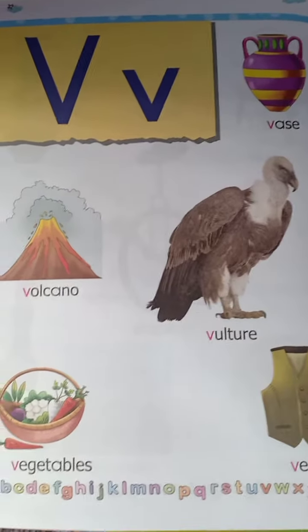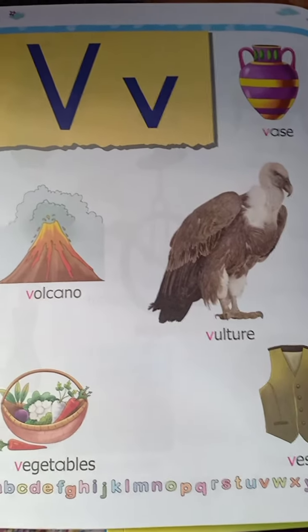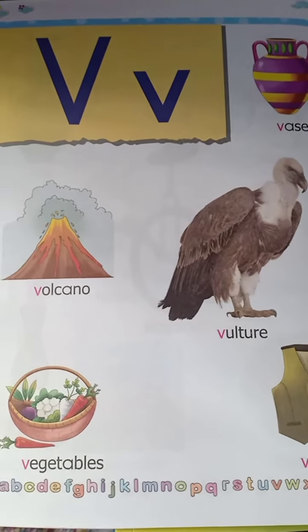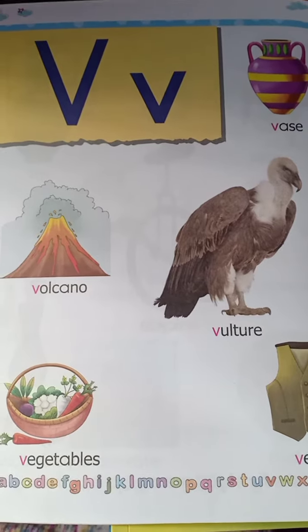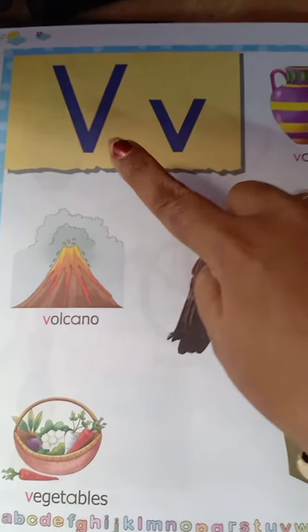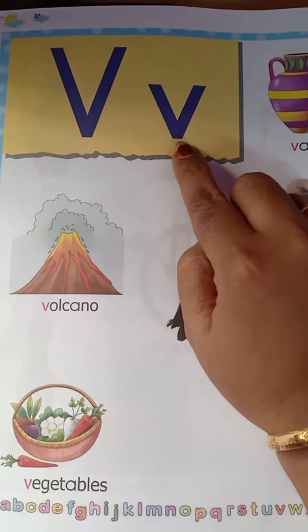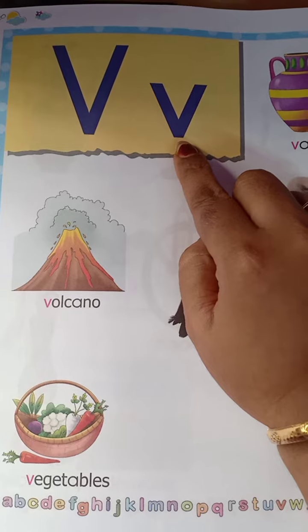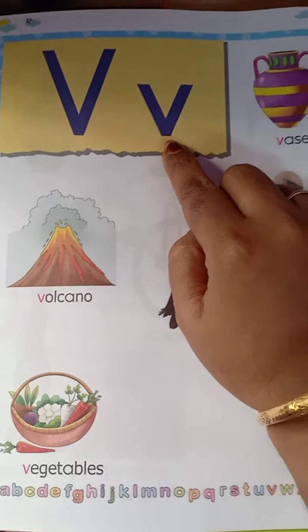Good morning children. Today we will do the alphabet V. See, there is the capital form of V and there is the small form of V.